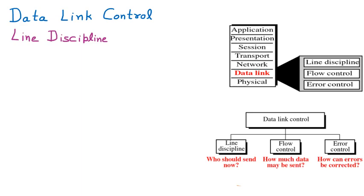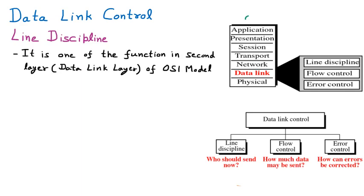We are discussing line discipline, which is one of the functions of the second layer — the Data Link Layer — of the OSI model. The OSI model has seven layers, and the second layer is the Data Link Layer. The first functionality of the Data Link Layer is line discipline. All these functionalities combined are called Data Link Control.